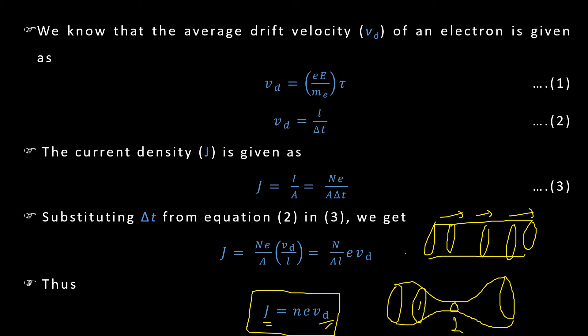In second cross section A is less so J will increase, density will increase and then what will happen to Vd? Vd will increase. So when electrons pass through second cross section they will speed up, as compared to while they are passing through first cross section.